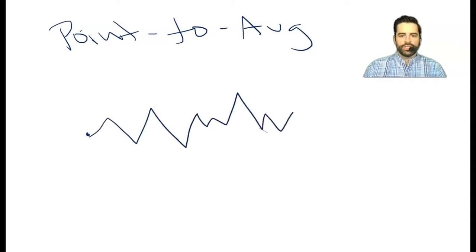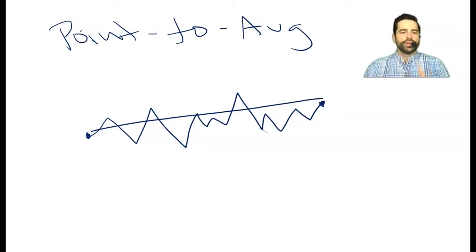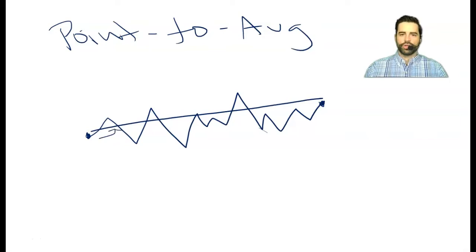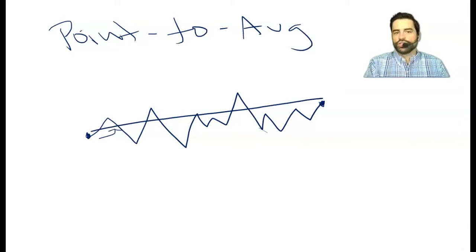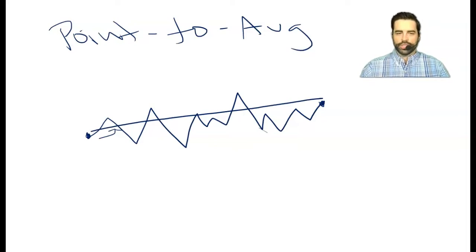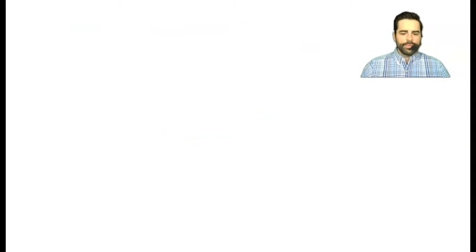You also have point to average. The market moves throughout the year between two points, and instead of measuring from start to end, it takes the average over that period. What you get credited is based on where it started relative to that average. I haven't seen a lot of this lately — some carriers had it in certain policies, but on newer products I'm not seeing much point to average anymore; it's mostly point to point and monthly strategies.